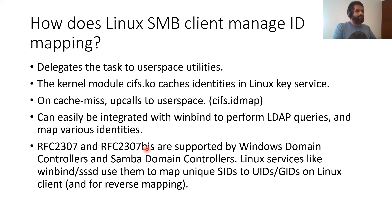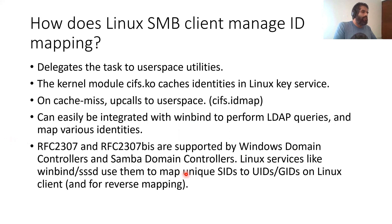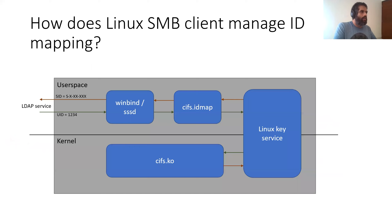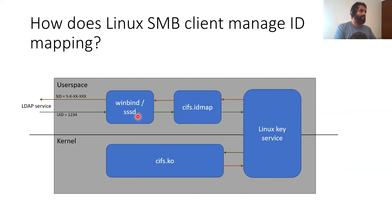RFC 2307 allows a centrally maintained database of mappings and is supported both by Windows domain controllers and Samba domain controllers, as well as by WinBind and SSSD for performing LDAP queries — providing the SID to UID or GID mapping. To summarize pictorially: CIFS.ko looks up the user's identity mapping in the Linux key service; if not found in cache, it upcalls into user space where cifs.idmap integrates with WinBind or SSSD to perform LDAP queries and get the mapping.